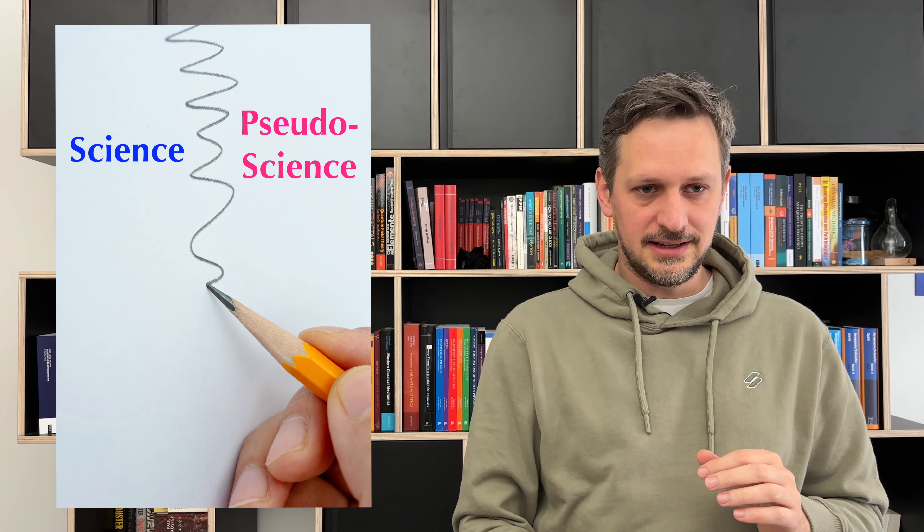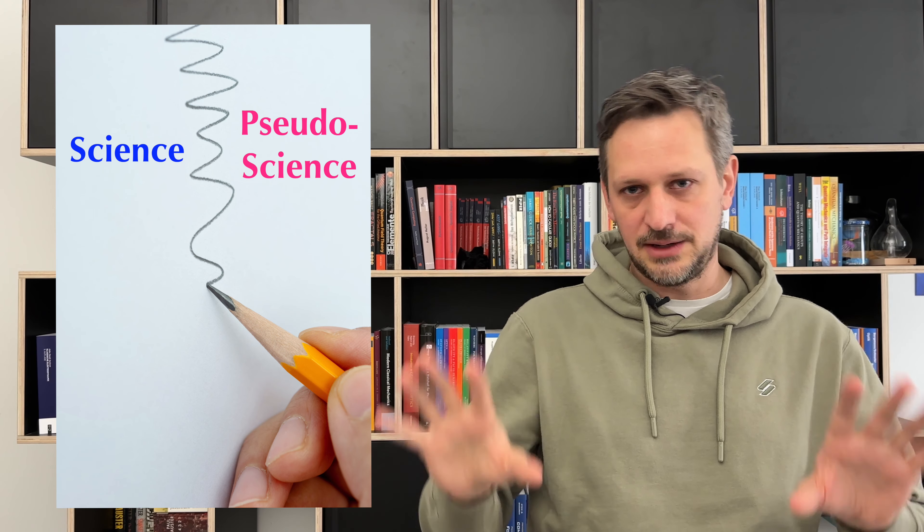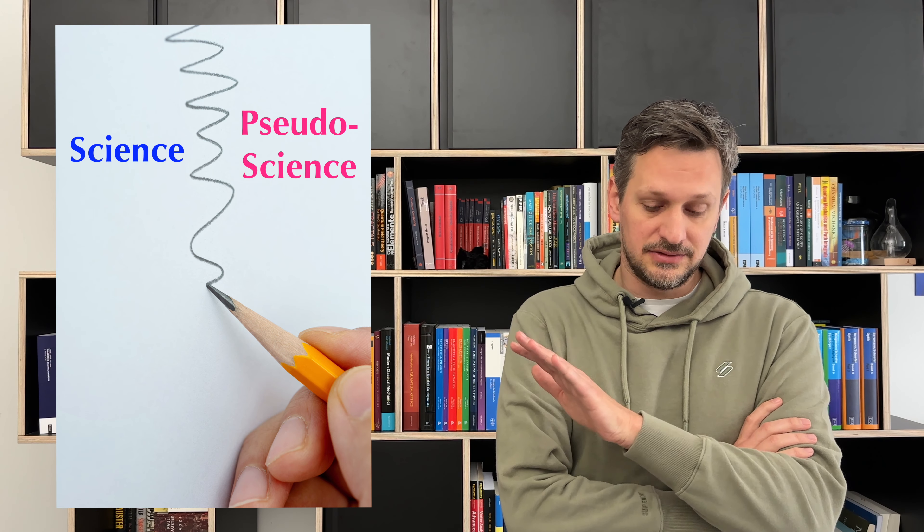If there is a difference between science and pseudoscience, you must be able to draw a clear demarcating line to distinguish the two. And while this sounds convincing, I have two objections with this.